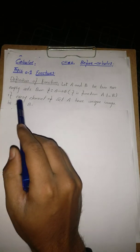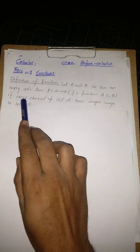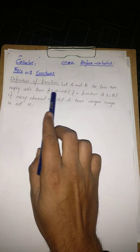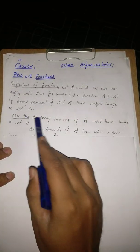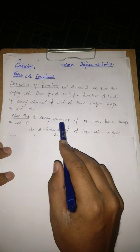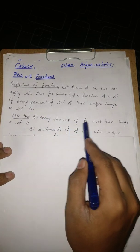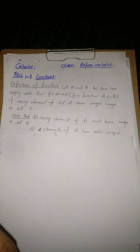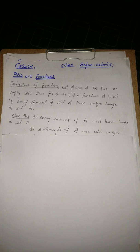There are two restrictions. First is 'every element' and second is 'unique image.' These two restrictions are on set A, not on set B. If f is a function from A to B, these two restrictions are on set A. The first restriction is: every element of set A must have an image in B — all elements of A must be attached with set B.